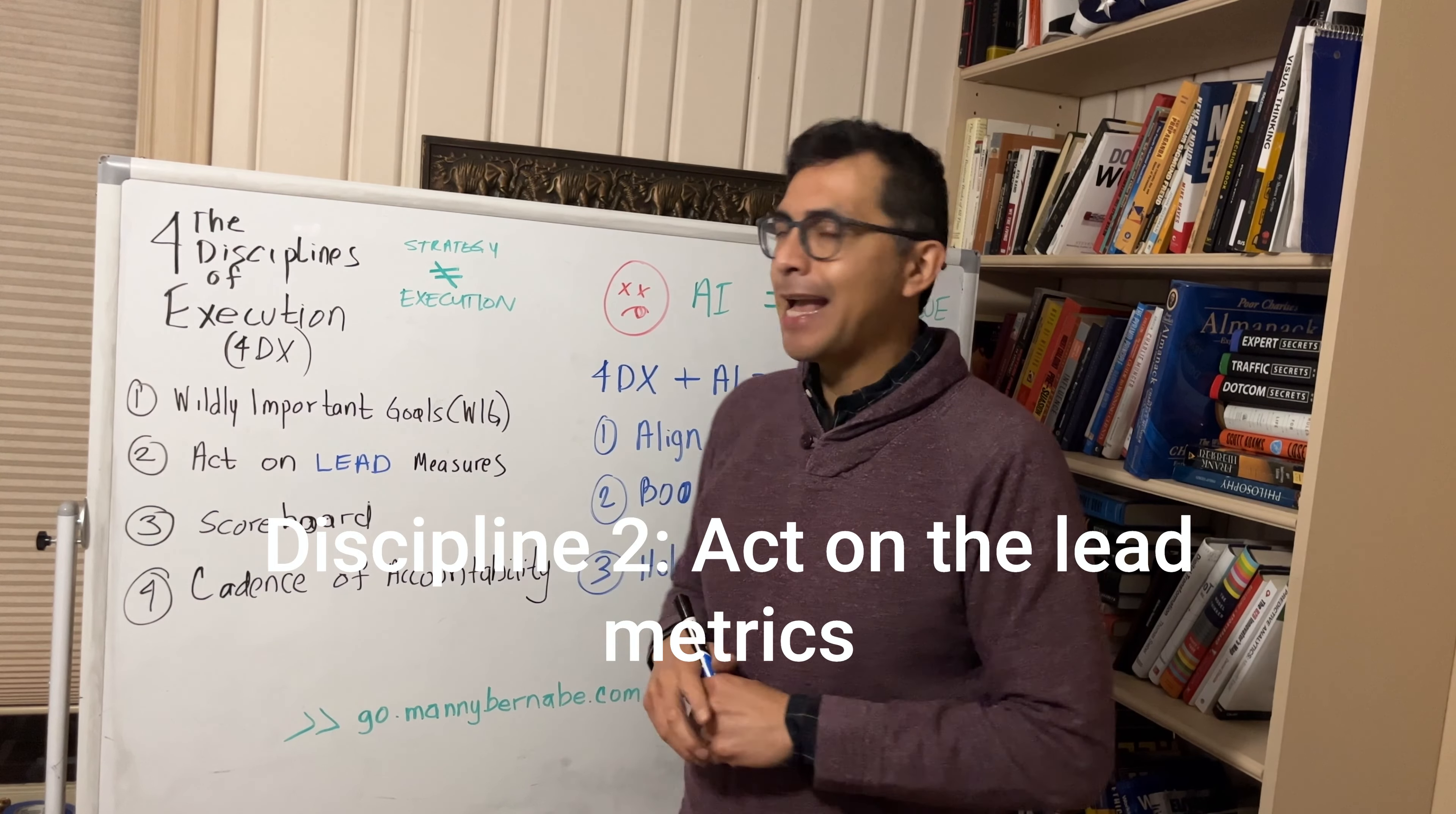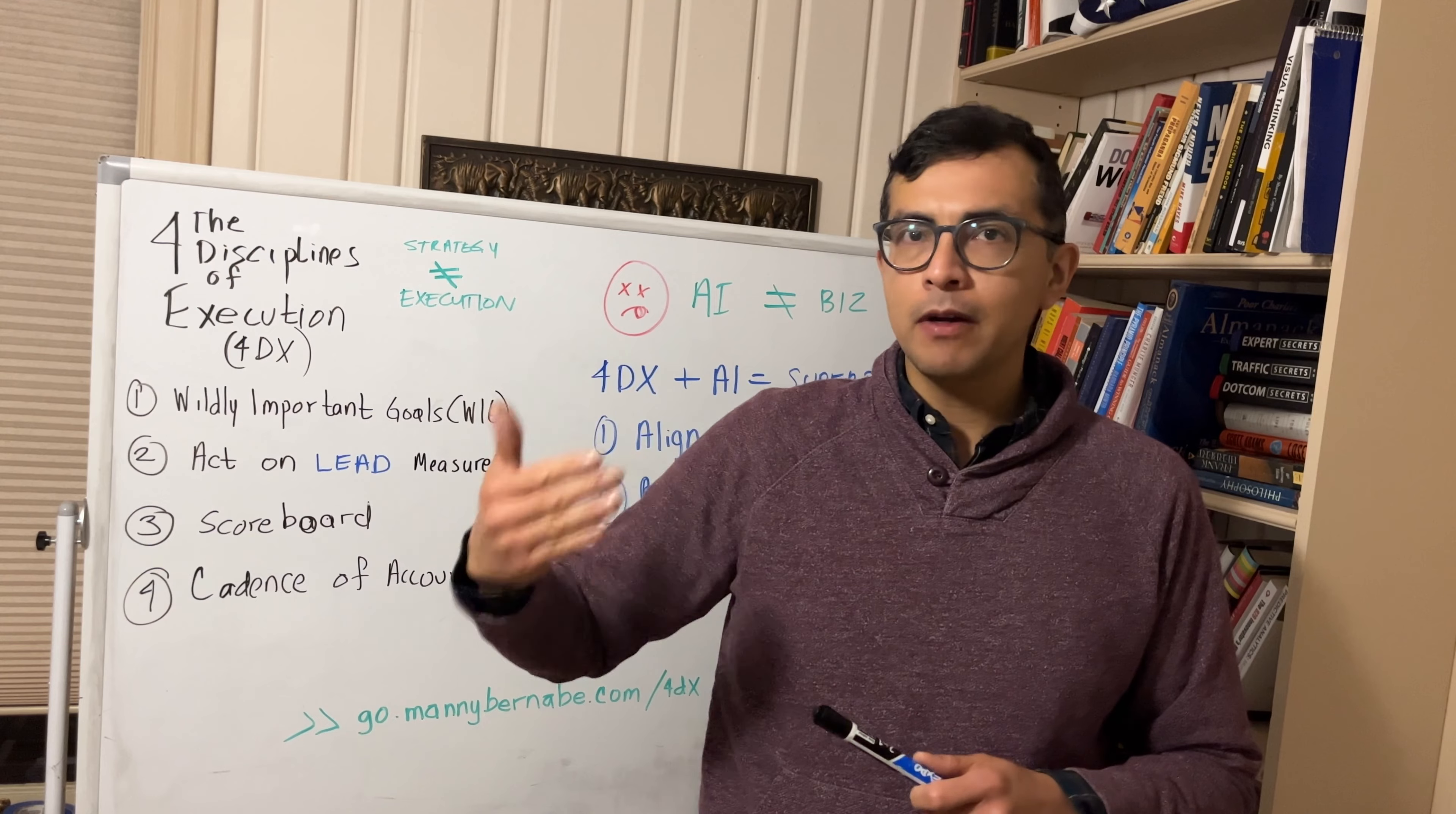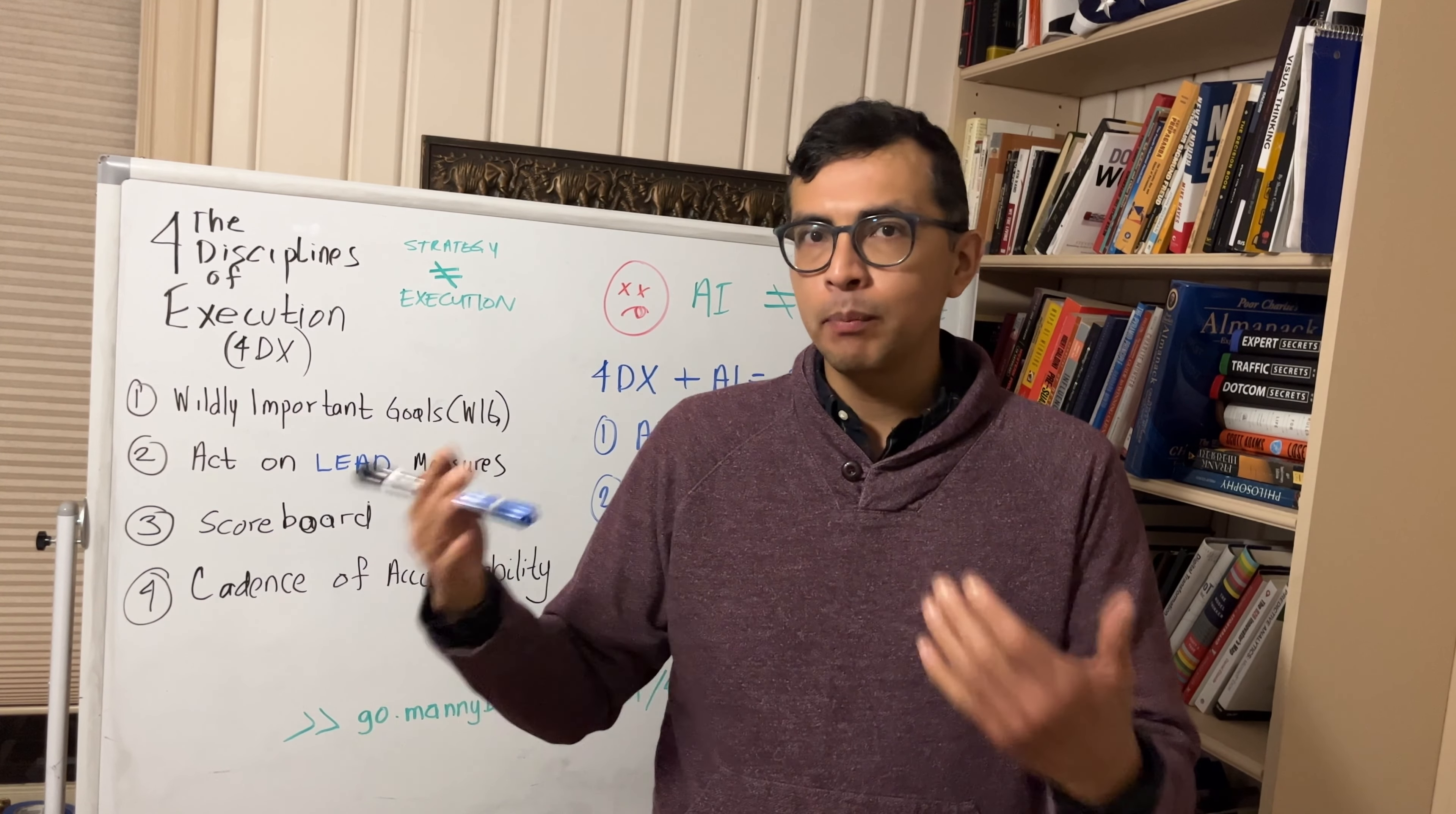Discipline number two is acting on lead metrics rather than lag metrics. A lag metric is something like revenue in a quarter or customer satisfaction that happens after doing a fair amount of work.